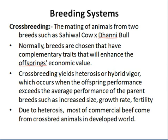Crossbreeding results in heterosis, or hybrid vigor. It increases heterozygosity, and heterosis occurs when offspring perform better than the average of their parents. For example, if the average growth rate of parents was 500 grams per day and the offspring grows at 700 grams per day, that 200 grams per day improvement is due to heterosis. In the developed world, most commercial beef comes from crossbred animals.